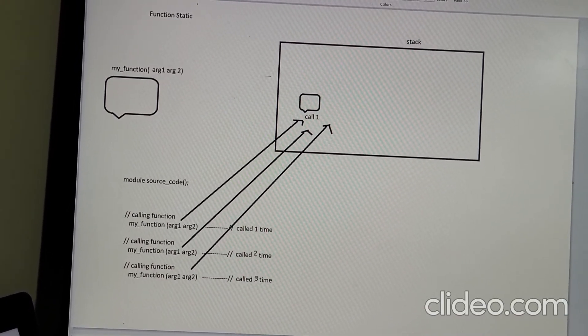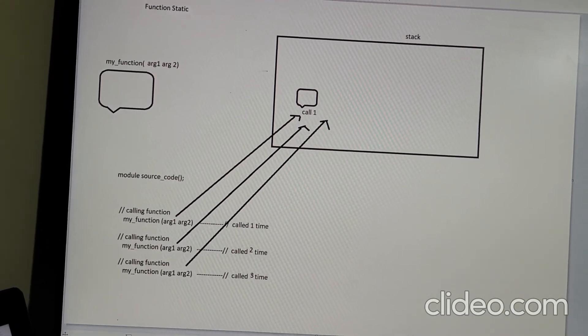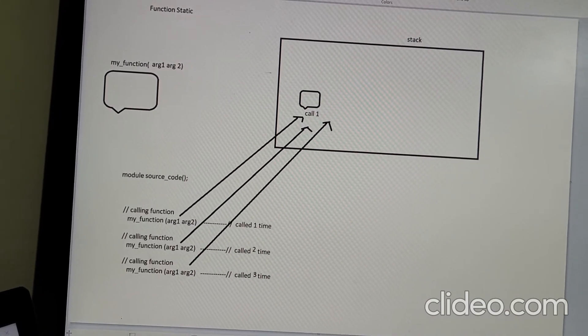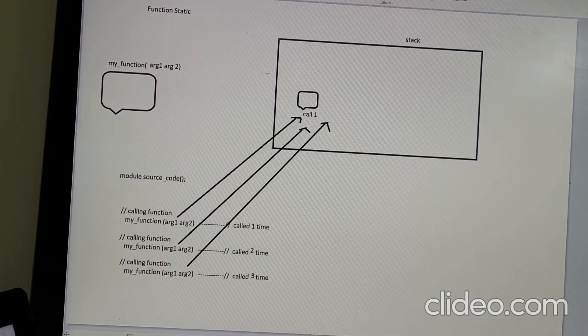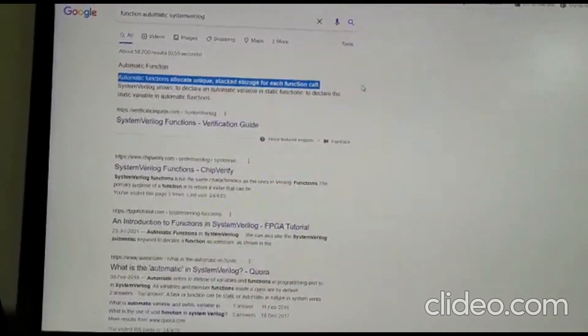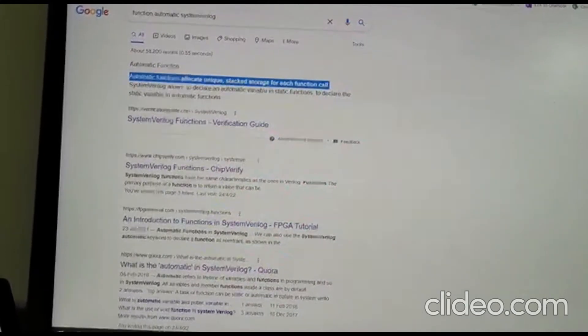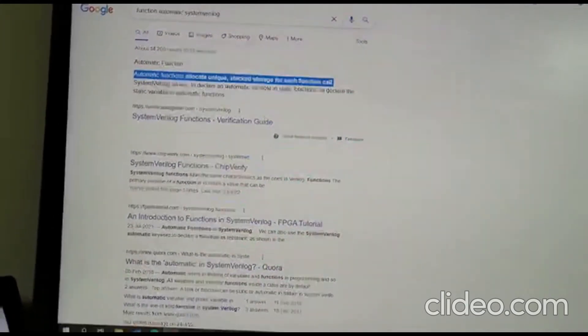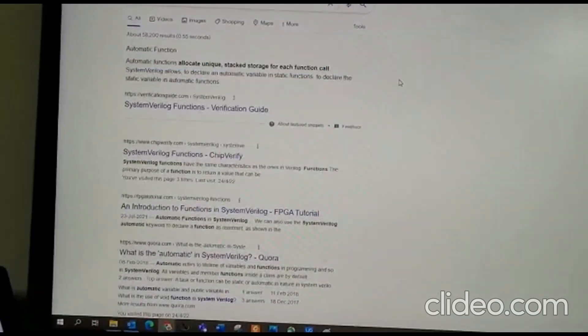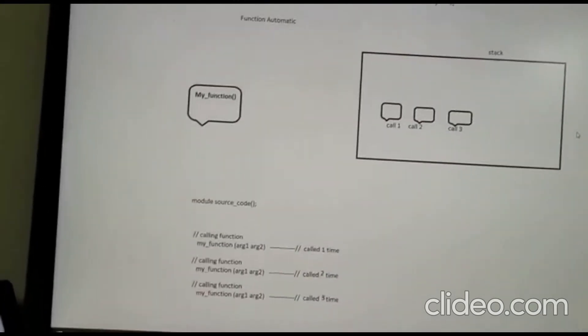To do that we are going to have an automatic function. The definition is: automatic function allocates unique stacked storage for each function call. Let us decode this sentence and try to understand.